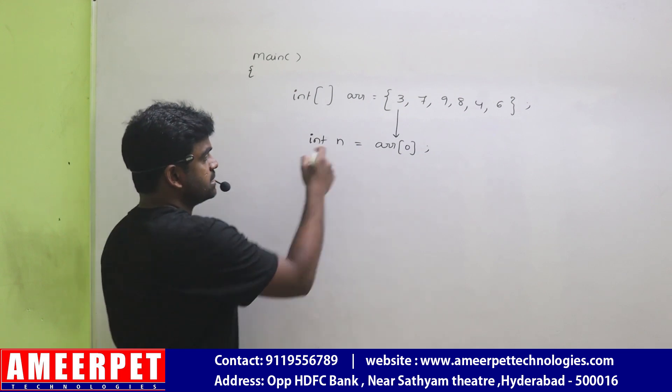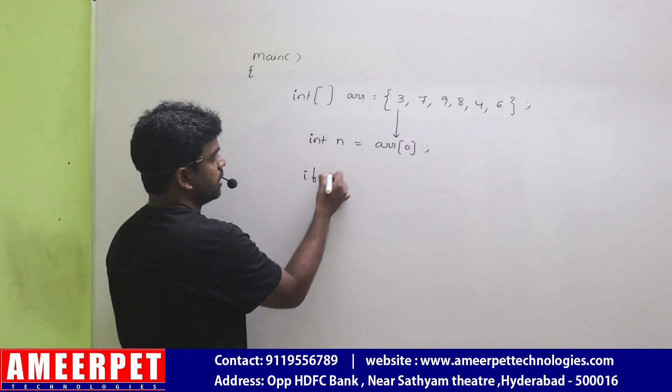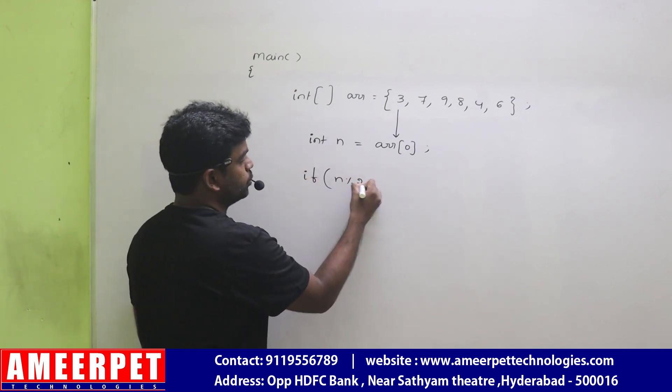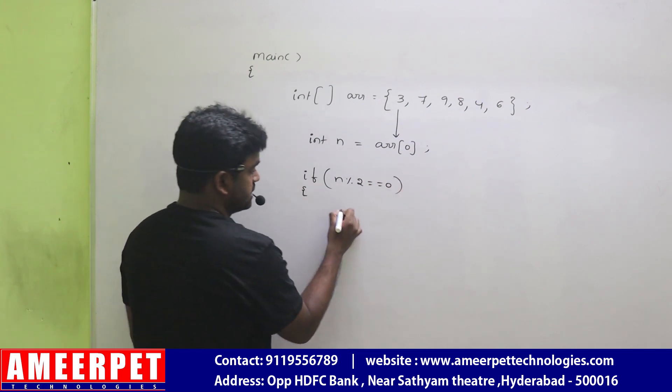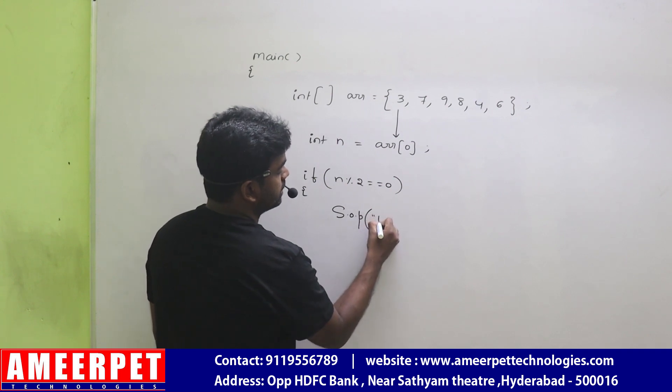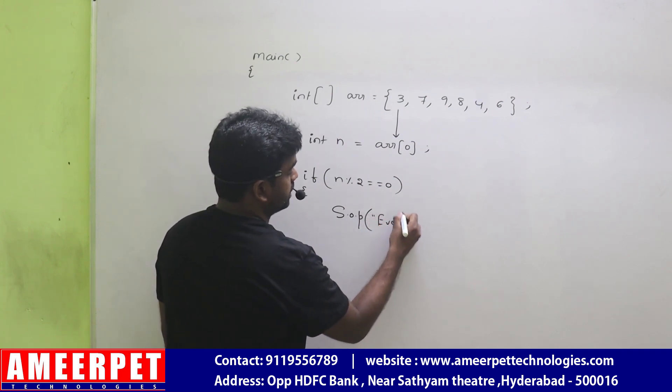And then check if this number is even or not: n mod 2 equal to 0, then System.out.println it's an even number.